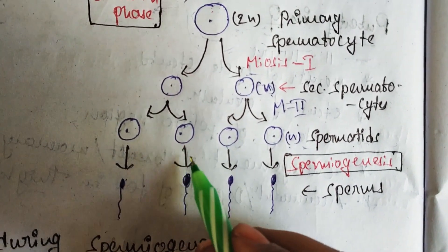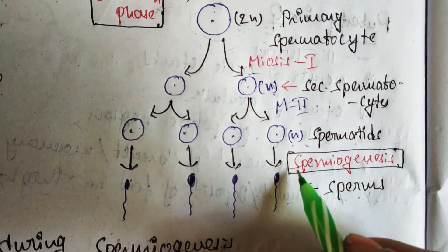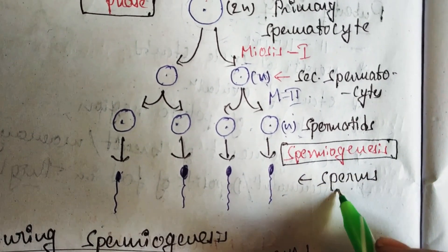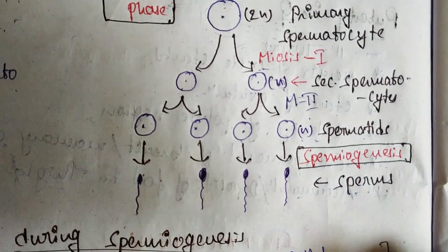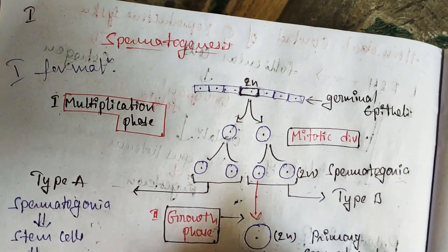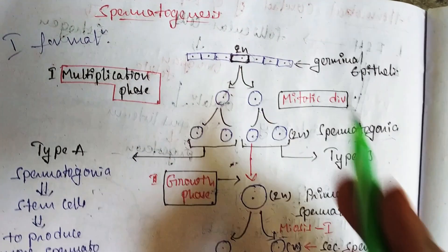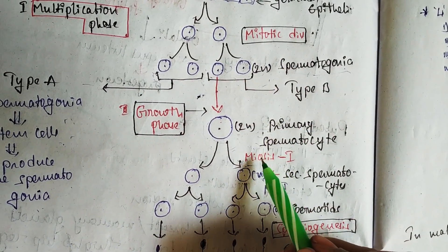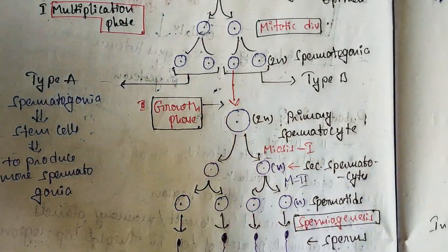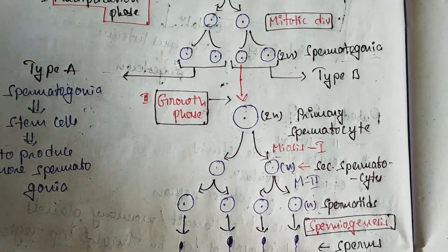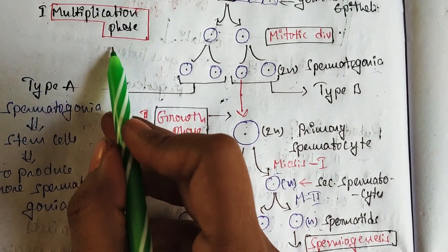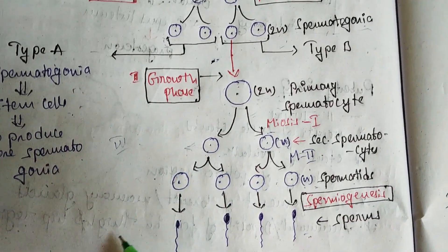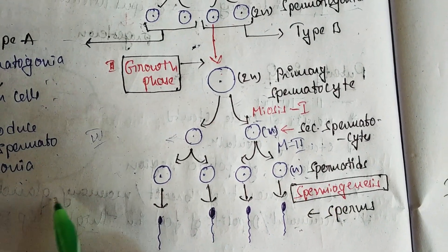The structural changes of spermatids to produce sperms is called spermiogenesis. Spermiogenesis means the formation and changes of spermatids into sperms. The total spermatogenesis process goes from germ cells up to sperms, involving multiplication phase, growth phase, maturation phase, and spermiogenesis.